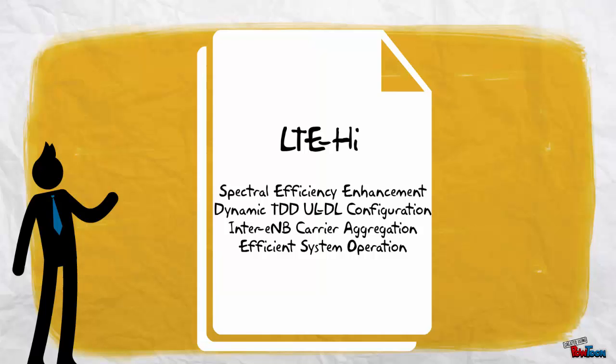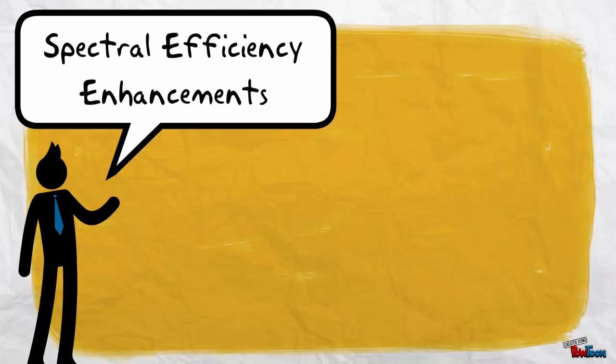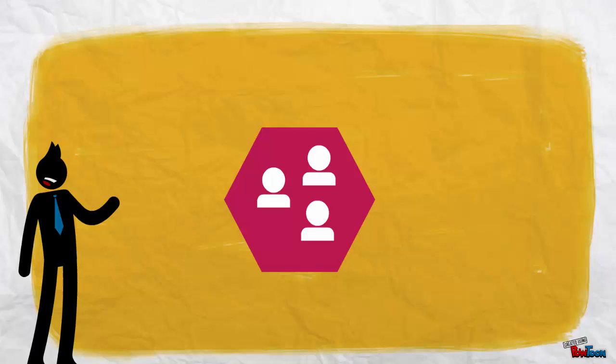As such, LTE High aims to solve these challenges through the following key technologies. First, spectral efficiency enhancements can be achieved in LTE High as the small cell's coverage is limited and fewer users need to be supported. This means that data within the cell is able to propagate better relative to the environment.